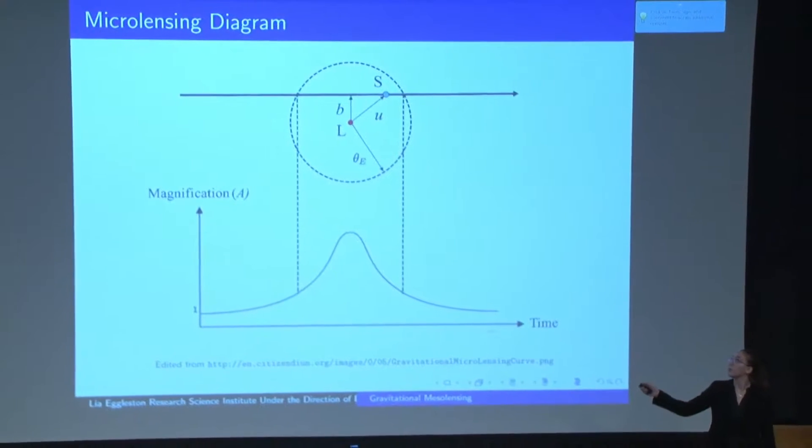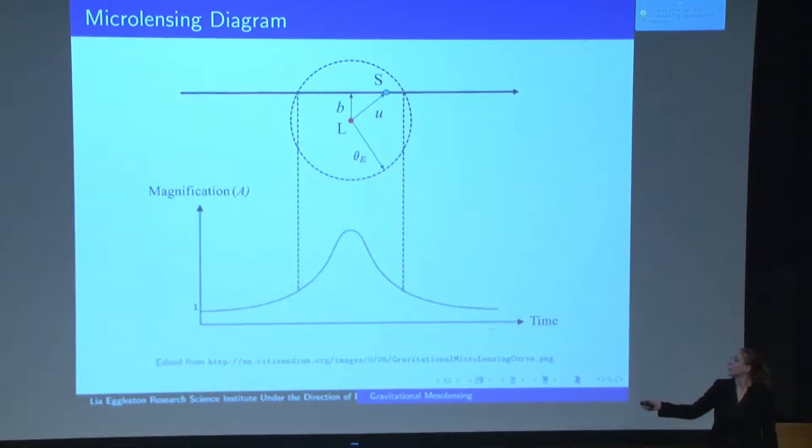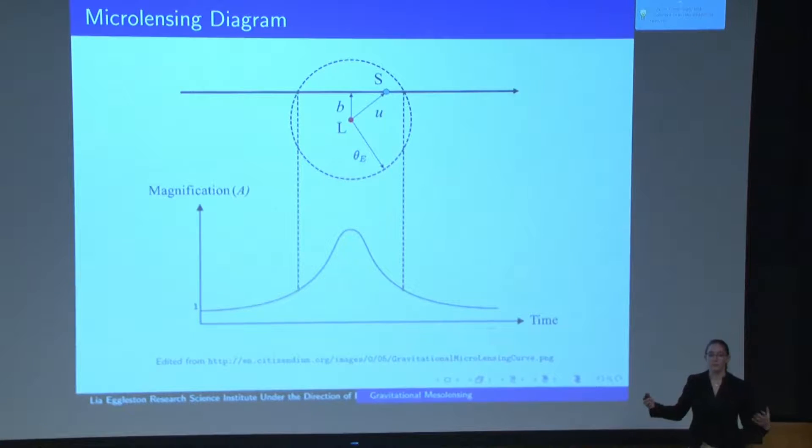So that at the distance of closest approach, we get a peak in the magnification of the light. And so this produces a very definable light curve, which starts at a flat baseline brightness and goes up to a peak and comes back down again during the event. And so these events can actually be recorded by surveys such as the Optical Gravitational Lensing Experiment, or OGLE.